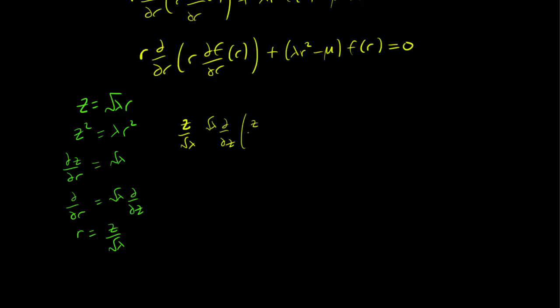Then d/dr becomes √λ (∂/∂z), and ∂f/∂r becomes √λ (∂f/∂z). When we substitute everything, the λ terms cancel out as shown.